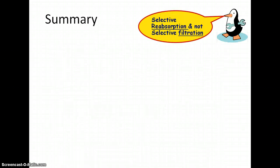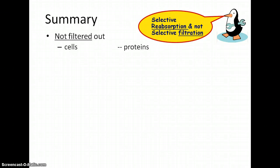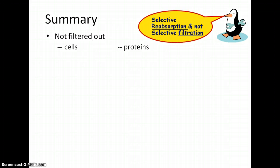Let me recap the importance of urine formation. What's not filtered out of your blood are things like red blood cells and proteins — if they are filtered out, we've got a serious problem and are looking at kidney damage. What is saved and put back into your blood are all those dissolved ions that your nervous system and bones need, in addition to water.